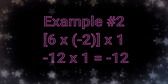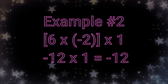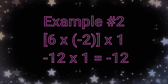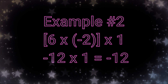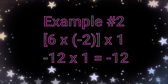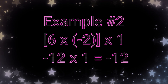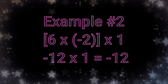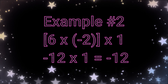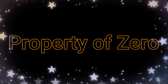Another example: if you multiply 6 by negative 2, and then multiply it by 1, so first multiply 6 times negative 2, then you will get negative 12, then followed by 1. So negative 12 times 1 is still negative 12. Now, let's move on to the second property of integers, which is the property of 0.